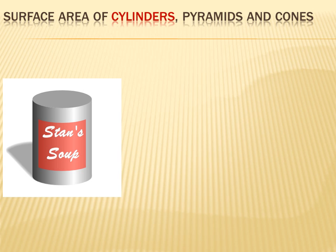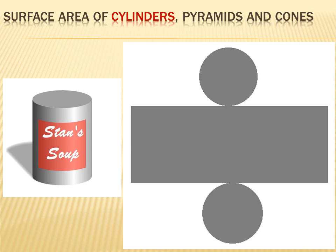When we talked about prisms, to figure out the surface area, we deconstructed the shape. We broke it down into components so we could figure out the area of each of those components and combine them to get the surface area of the entire shape. We can do that with a cylinder too. If I were to deconstruct this can of soup, I'd have a top that's a circle, a bottom, and a lateral face that connects the two bases. If I were to straighten that out, it'd look like a rectangle.